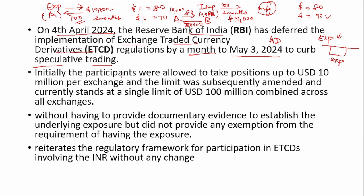Initially, participants were allowed to take positions up to $10 million per exchange. There are two exchanges in India: National Stock Exchange and Bombay Stock Exchange. So together it was $10 million. But later it was amended, and now it stands at $100 million across all exchanges combined, including all currencies. For example, if exporter A exports to the US, Euro zone, and UK, he will have contracts like INR-USD, INR-Euro, INR-Pound — and together these must be within $100 million.